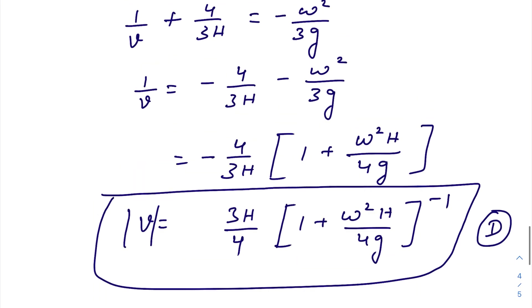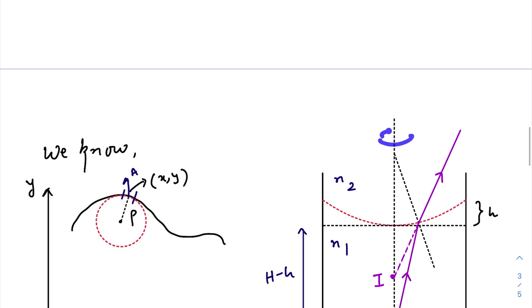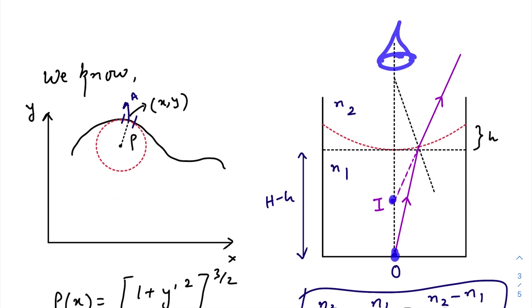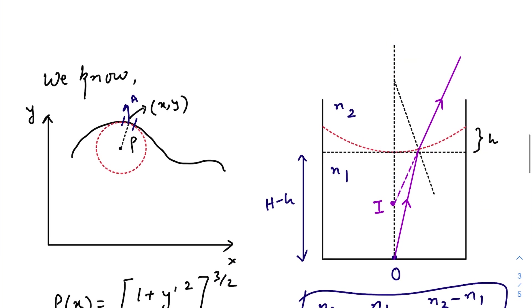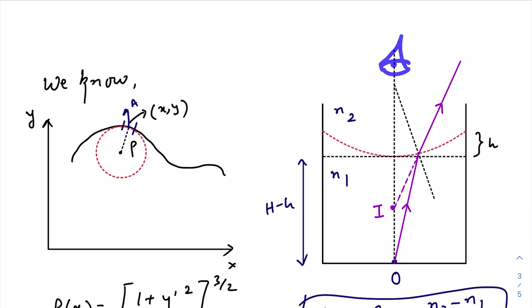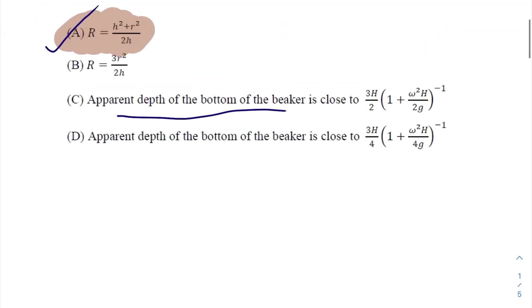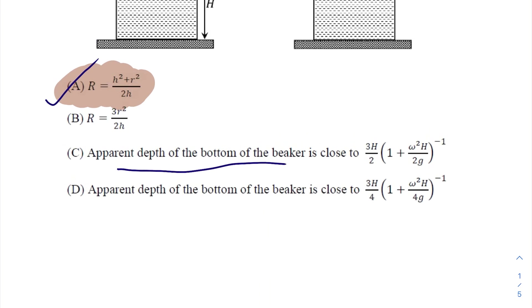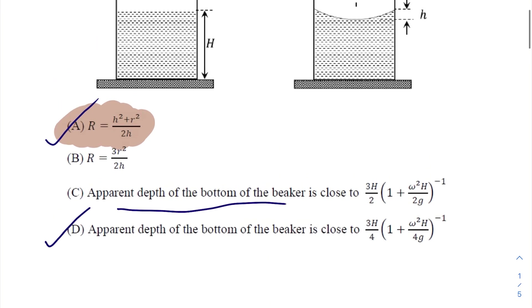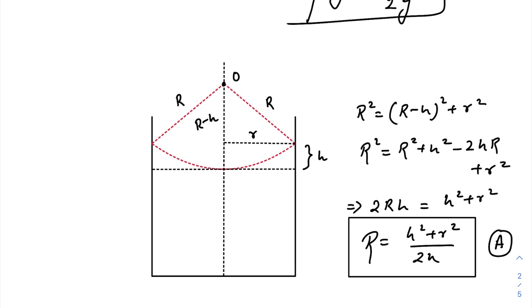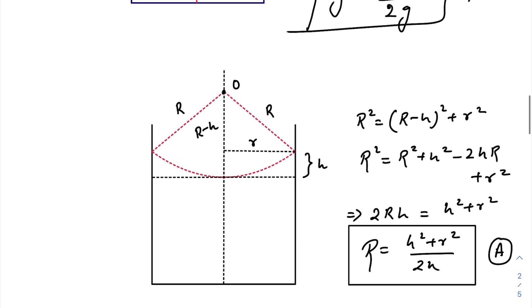...and taking the magnitude only, this one will be the expression for apparent depth. That means a person watching the bottom of the beaker - this bottom of the beaker will appear to be at this depth. So this thing will be the apparent depth for any observer watching from the other side of the water surface. So I hope... let me first mark this. I think option D is correct. Yeah, right.